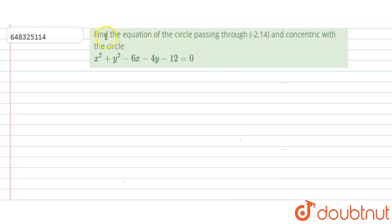Hello all. Today we have a question in which we have to find the equation of the circle that is passing through the given point (-2, 14) and concentric with the circle x² + y² - 6x - 4y - 12 = 0. So let's start solving this question.